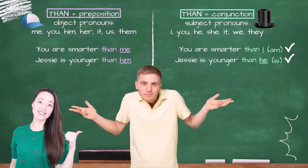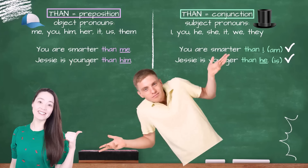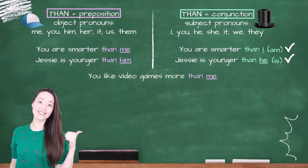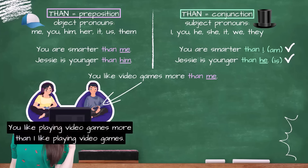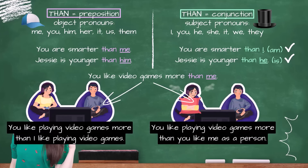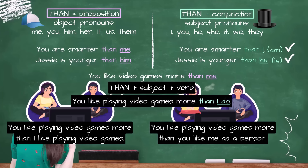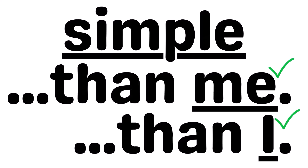So is there no difference between the preposition and the conjunction? Let me show an example where using 'than' as a conjunction is better. 'You like video games more than me' is correct, but it could mean two different things: one, you like playing video games more than I like playing video games; or two, you like playing video games more than you like me as a person. So sometimes, to avoid confusion, it's better to use 'than' as a conjunction and follow it with a subject and a verb: 'You like video games more than I do.' Normally there isn't any confusion — context will tell you. To keep things simple, 'than me' and 'than I' are both correct. It's about formality and personal preference.